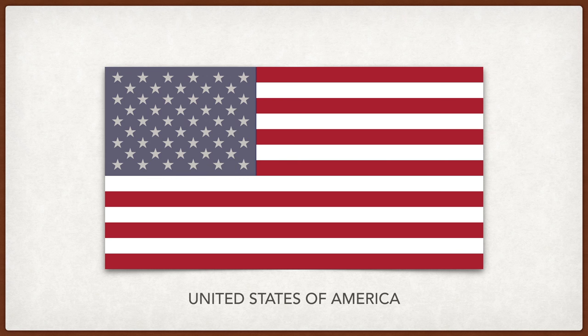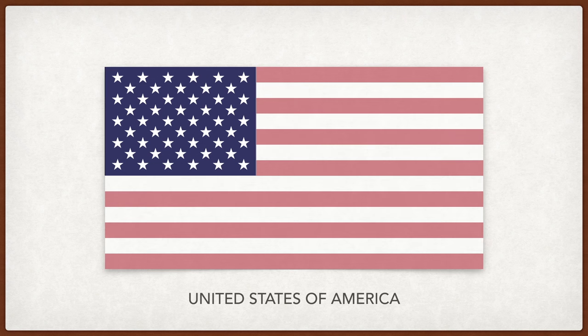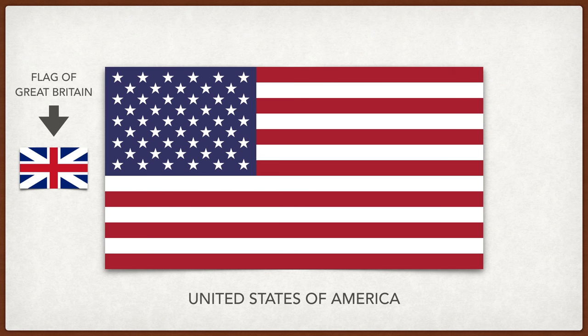The United States. The 13 stripes represent the 13 founding states, and the 50 stars the current 50 states. The colors were probably taken from the British flag, and later meaning was attributed to it such as courage, purity, and justice.